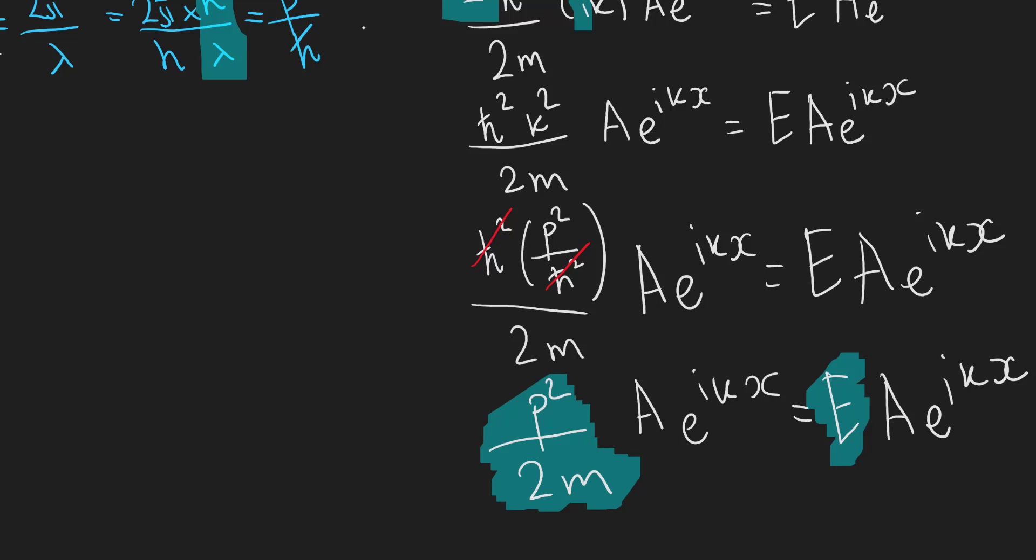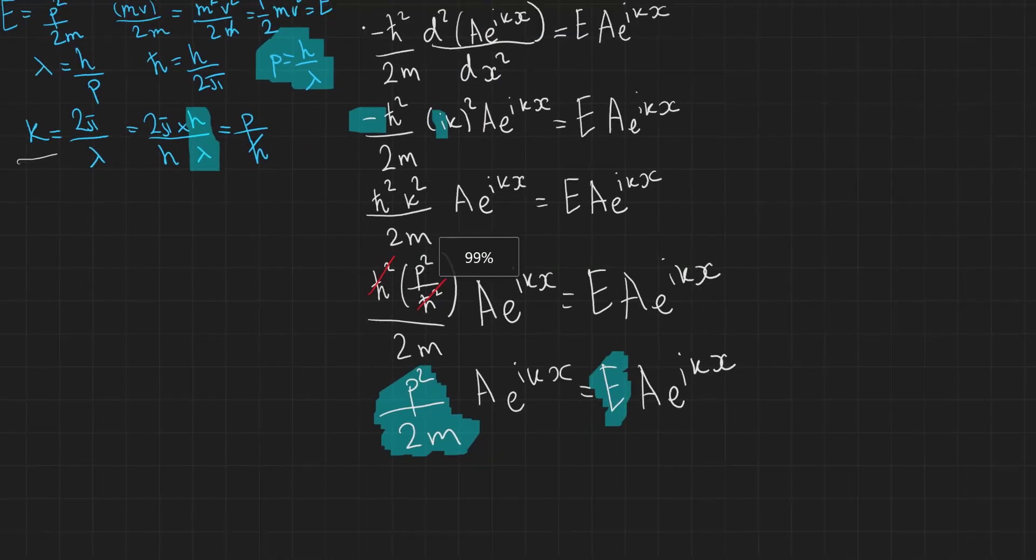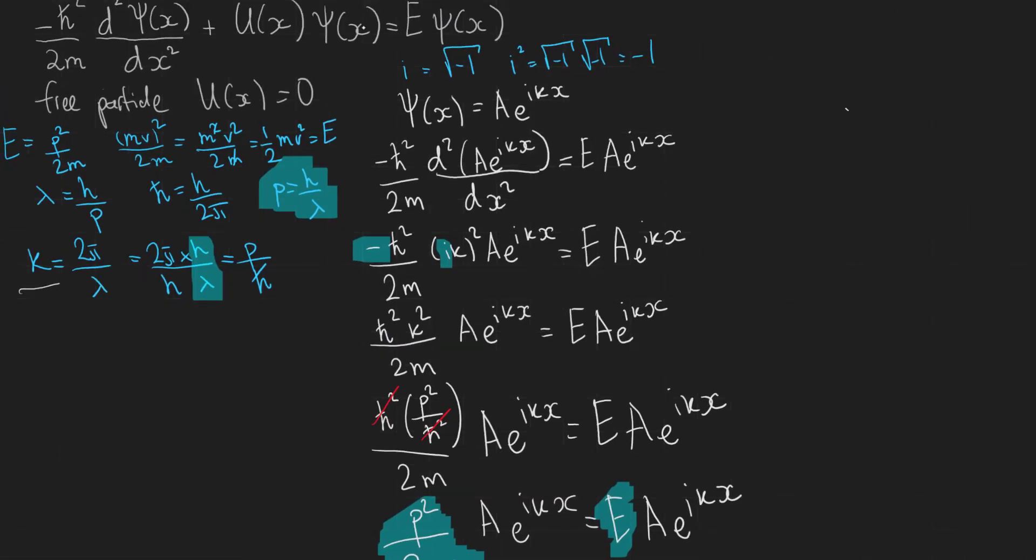Think about this guys. We've actually used Schrödinger's equation to show that for a free particle with no potential, so there's no force acting on it, the particle is happy and free. The kinetic energy or the total energy is equal to p^2 over 2m, which is just the kinetic energy.